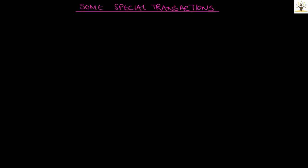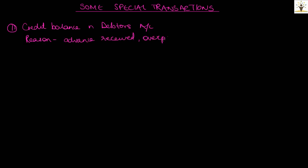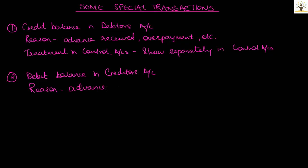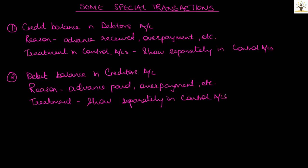Let us also consider some special transactions in preparing control accounts. First, credit balance in debtors accounts: debtors normally have a debit balance, however it is possible that there may be a credit balance in a debtor account, possibly due to advance receipt from the debtor or overpayment. The credit balances in debtors accounts, if any, should be mentioned separately in the sales ledger control account. Second, debit balance in creditors accounts: similarly, a creditor account may show a debit balance at times due to any advance paid or overpayment. The opening and closing debit balances in creditors accounts shall be mentioned separately in the purchase ledger control account.